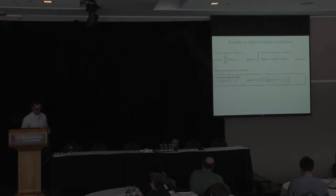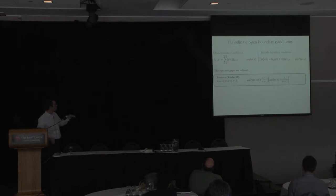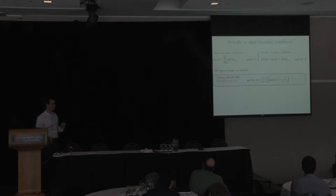What's kind of amazing is that the spectral gaps of these chains — the open boundary and the periodic boundary chain — are related. There are two integers, m and n, where m is larger than n. On the left-hand side, we have the gap of the Hamiltonian for the periodic boundary chain of size m. But on the right-hand side, everything depends on n.